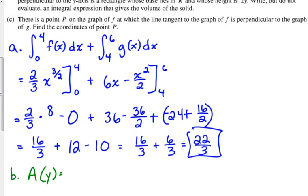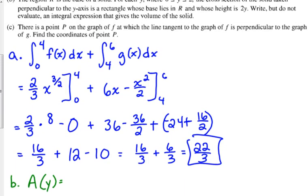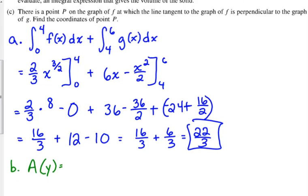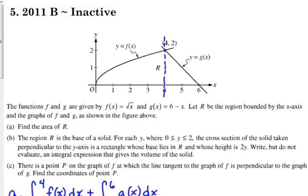We need to figure out our area formula in terms of Y for a rectangle. They give us the height of the rectangle. This is rectangle base times height. They give us the height is 2Y. How do we find the base? We're talking about rectangles perpendicular to the Y axis. That would be G of Y, that's the top function, minus F of Y. So we need to rewrite these functions in terms of Y.